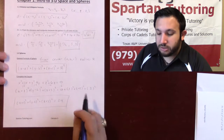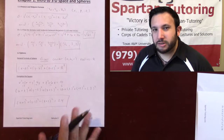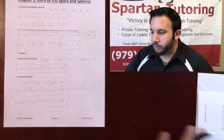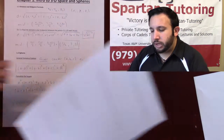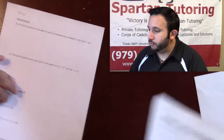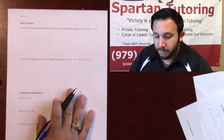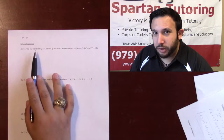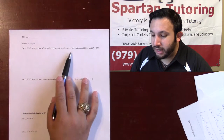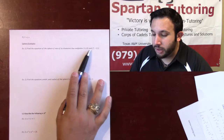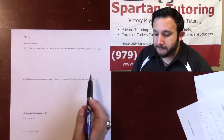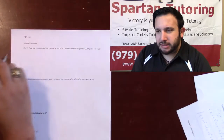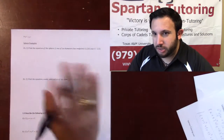Now that we have the foundations down, let's do a couple of practice problems. Number 1 says: find the equation of a sphere if one of its diameters has the endpoints (1, 2, 0) and (7, negative 2, 5). Let's talk strategy. A diameter goes through the center and touches the edge of the sphere, so I'll draw a circle and pretend it's three-dimensional.